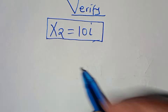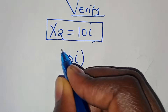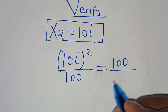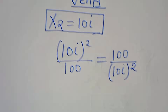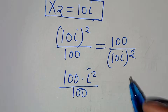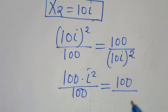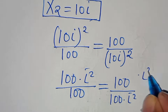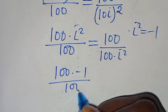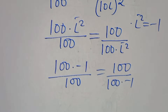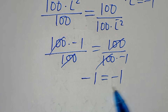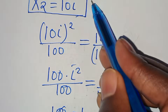Let's check x₂, which is 10i. We have 10i raised to the power of 2 divided by 100, this is equal to 100 divided by 10i raised to the power of 2. So 10 squared is 100, times i squared divided by 100, equal to 100 divided by 100 times i squared. Since i squared equals minus 1, this gives 100 times minus 1 over 100 equals 100 over 100 times minus 1, simplifying to minus 1 equals minus 1. This confirms x₂ equals 10i satisfies the equation.